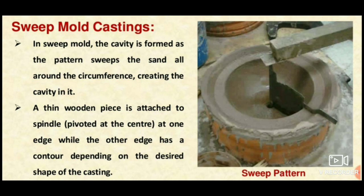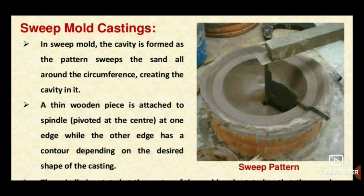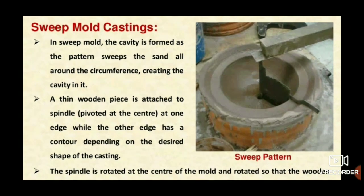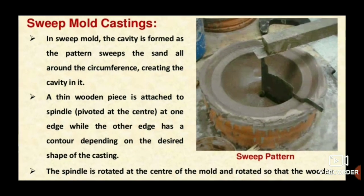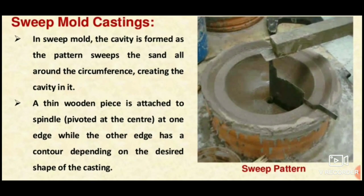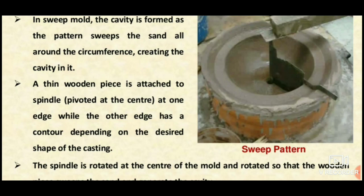A half-size pattern is made and attached to a spindle. The spindle rotates so that the pattern sweeps the sand and makes a mold cavity. Basically, a thin wooden piece is attached to the spindle, pivoted at the center at one edge, while the other edge has a contour shape.